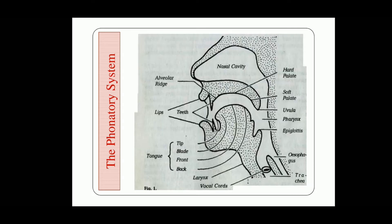Friends, you can see here an image of our mouth. The different organs of speech that are engaged in the production of speech sounds can be seen here. The vocal cords, the larynx, and the air which passes through this windpipe — it goes out into the atmosphere through the nasal cavity and oral cavity.